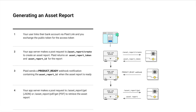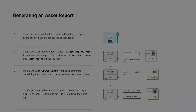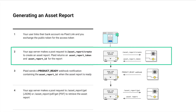Then just wait for Plaid to send you a product ready webhook. Once you receive this, the asset report is ready for you to retrieve. Now we'll go into each of these steps in more detail, starting with step two: creating the asset report.